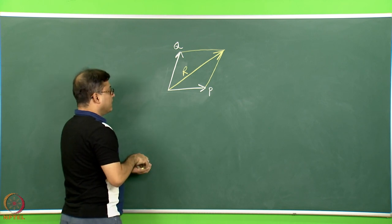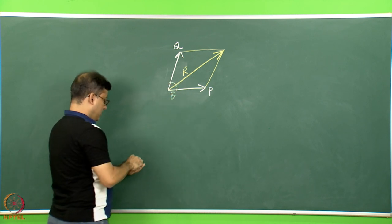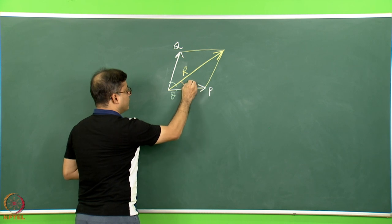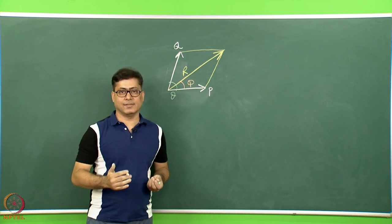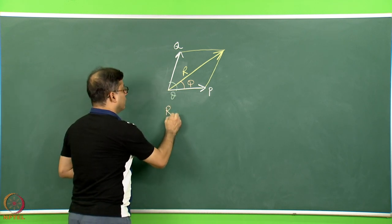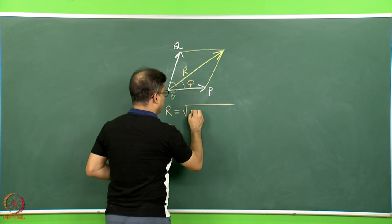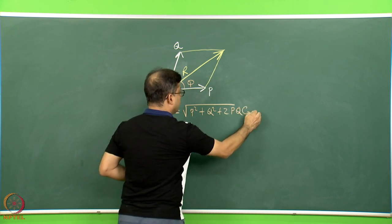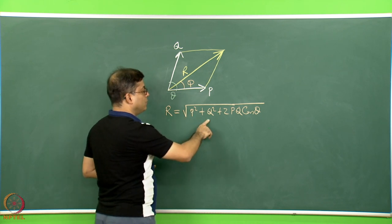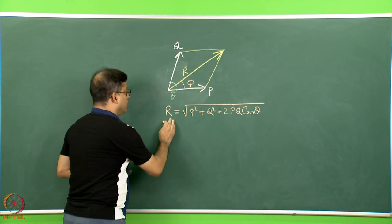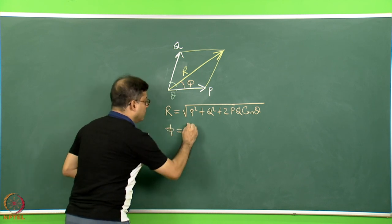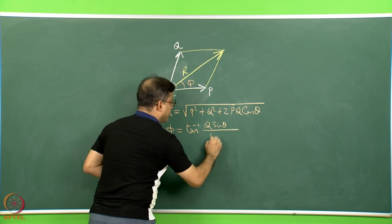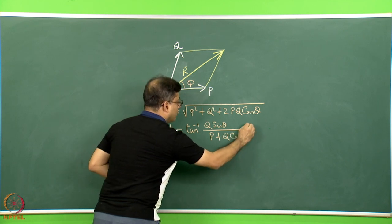Suppose the angle between the P and Q vectors is given by theta, and the angle between the resultant vector and the P vector is given by phi. Then we can write: R equals the square root of P squared plus Q squared plus 2PQ cos theta, where R, P, Q are magnitudes. We can also write phi equals tan inverse of Q sin theta divided by P plus Q cos theta.